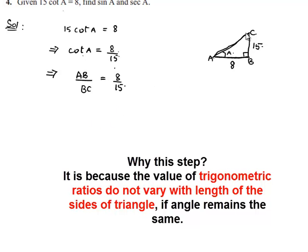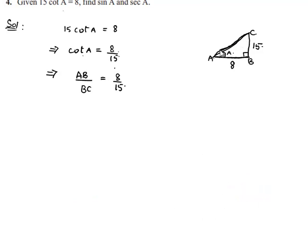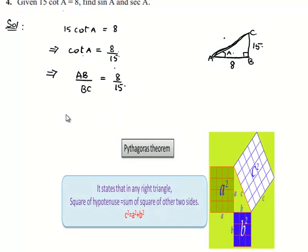Now in order to get sin A and secant A, we need to find the value of AC the hypotenuse. Now by applying the Pythagoras theorem to triangle ABC, we know that the hypotenuse square is equal to sum of squares of other two sides.